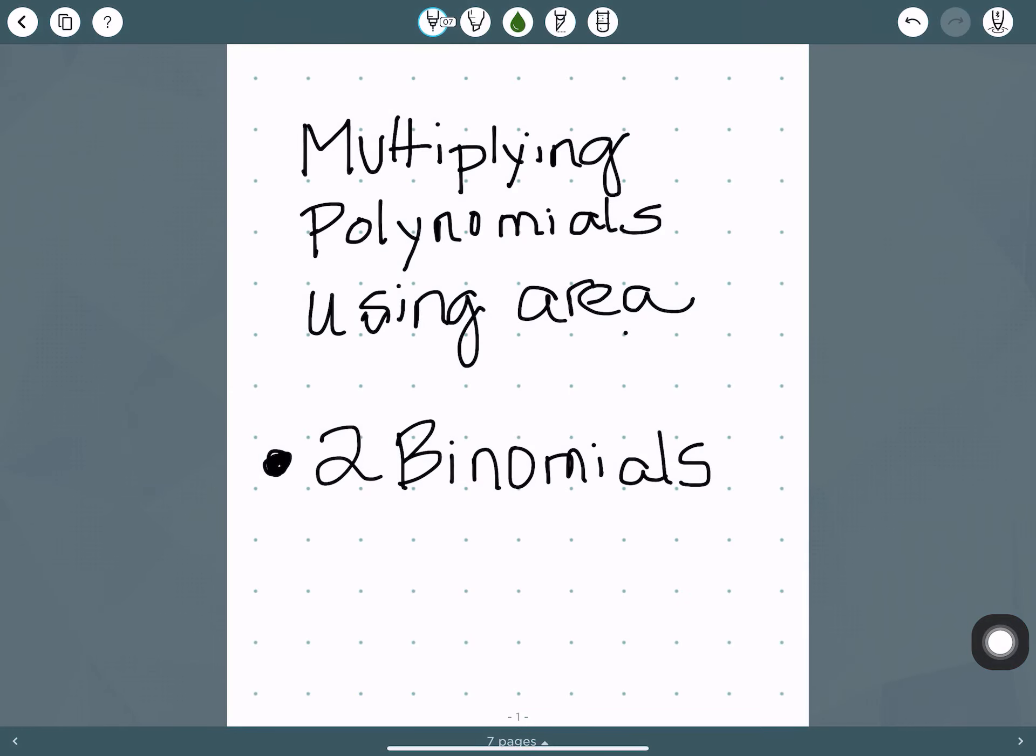In this video, we are going to look at multiplying polynomials using area. We are going to only be multiplying two binomials in this video. So remember, a binomial has two terms, 2x plus 1. 2x is a term, 1 is a term, multiplied by another binomial, x minus 4.